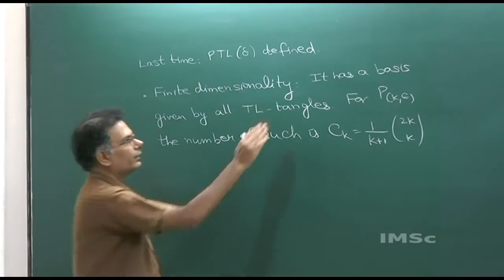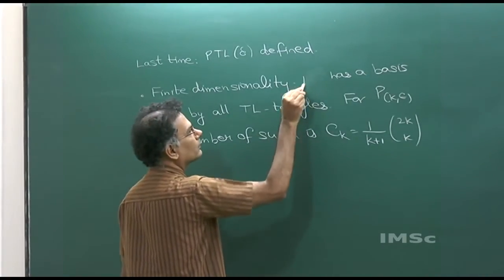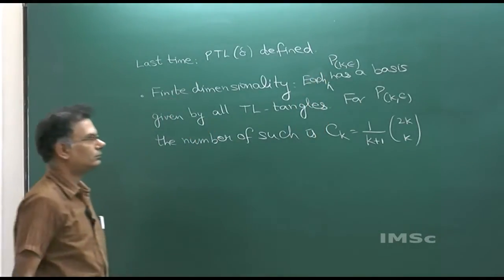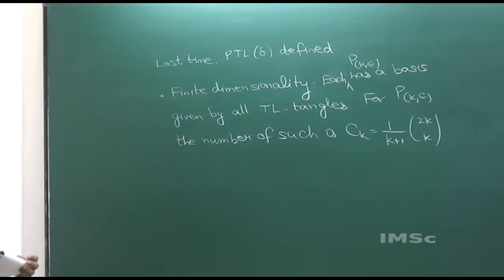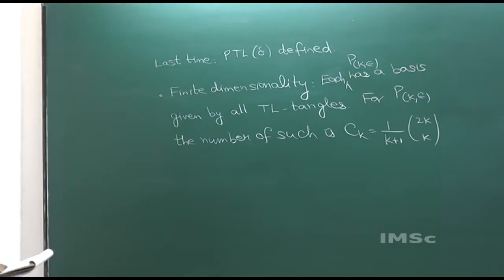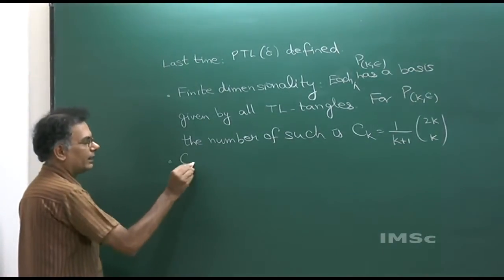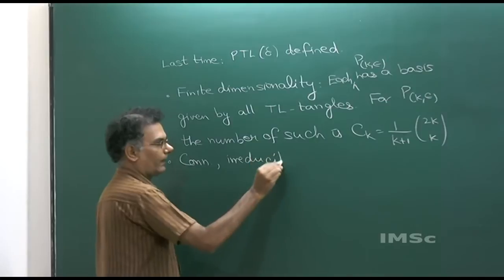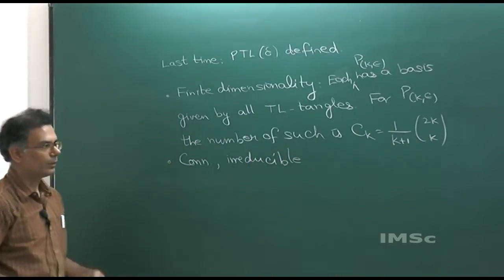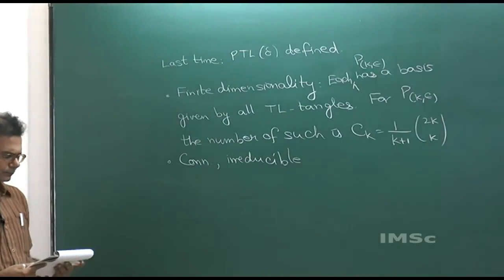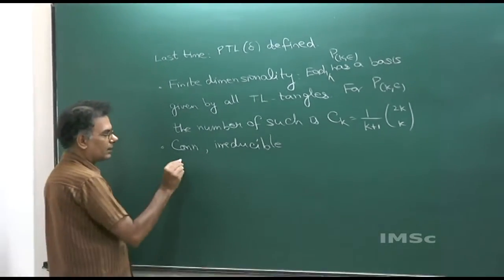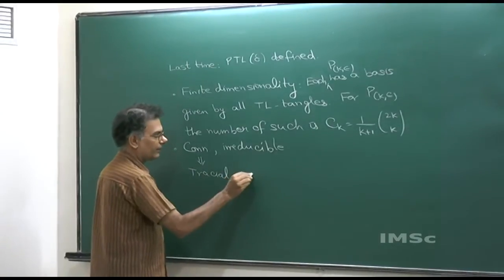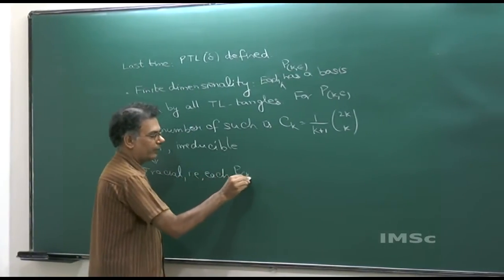When I say it has a basis, I should say each P_k epsilon has a basis given by all Temperley-Lieb tangles of that size, with the number given by the Catalan number. Then, we showed it is connected and irreducible — in particular, the 0 and 1 spaces have dimension 1. And in particular, connectedness implies that it is tracial: each P_k epsilon is equipped with a trace.